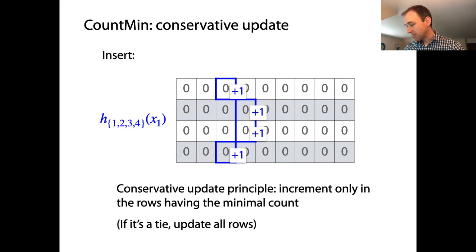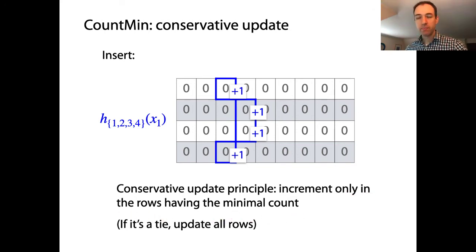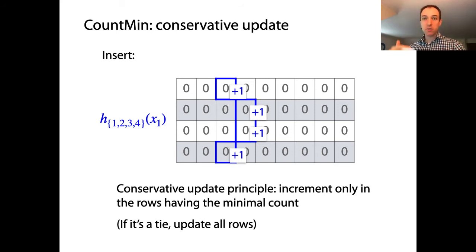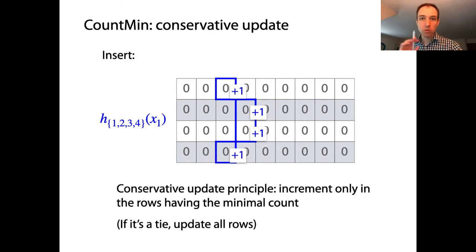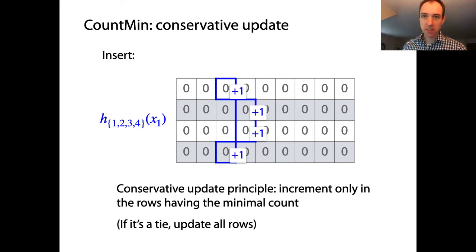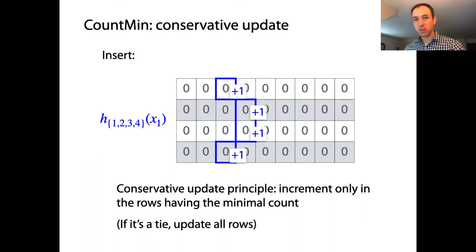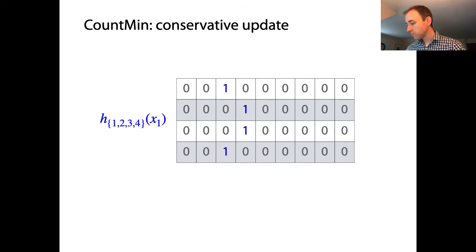Using the same x1, x2, x3 and hash functions, the new update principle is: increment only in the rows that have the minimal count. The hash function sends us to a particular element in each row; if those elements have different counts, we update only the rows with the minimal value. If there's a tie, we update all tied rows. For x1 on an empty sketch, all four rows are 0, so we increment all four — a four-way tie.